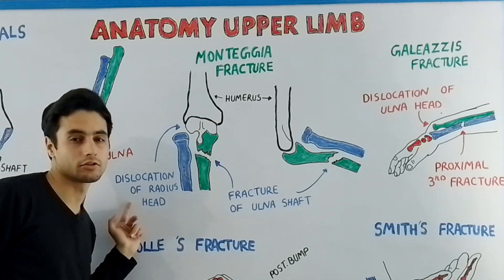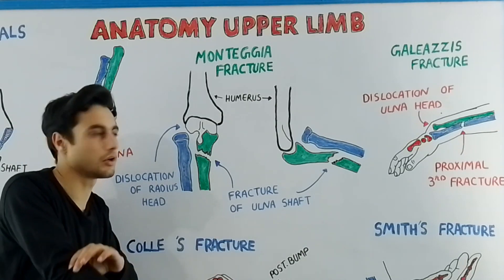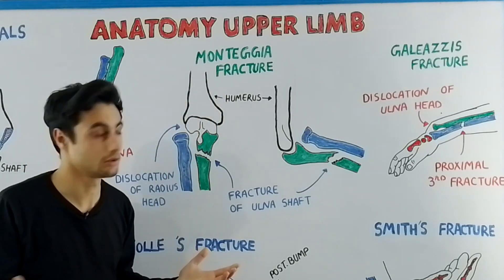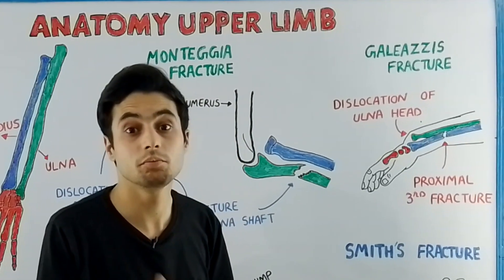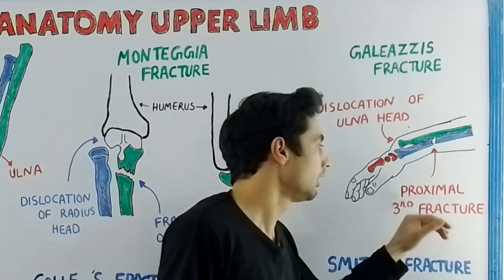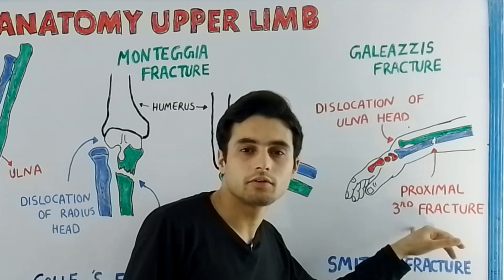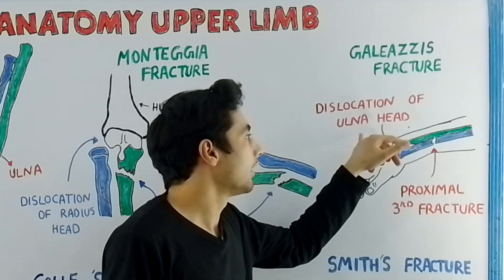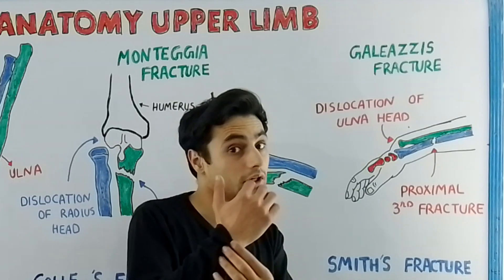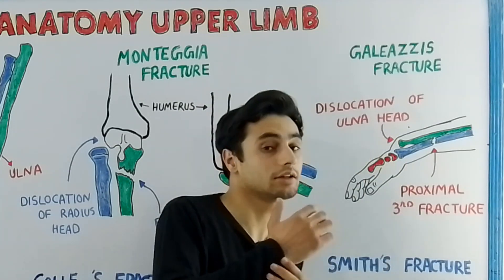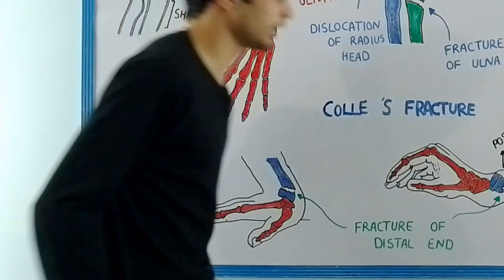This is the Monteggia fracture. The Galeazzi fracture is also very similar but the bones are different — the fracture is at the proximal third of the radius bone, and the head of the ulna is dislocated, which occurs at the wrist joint.